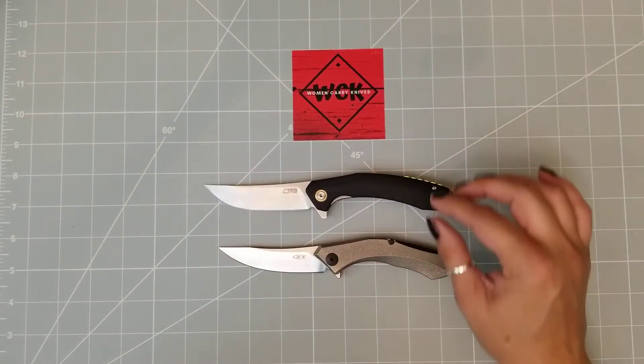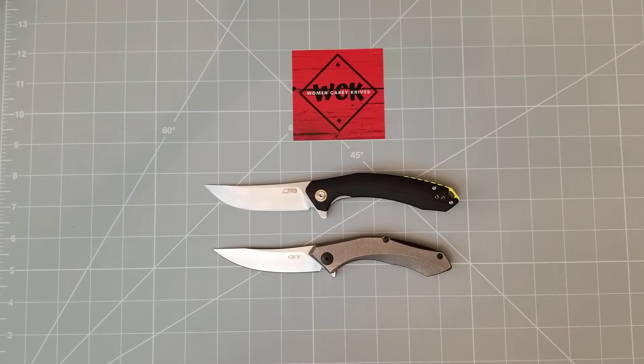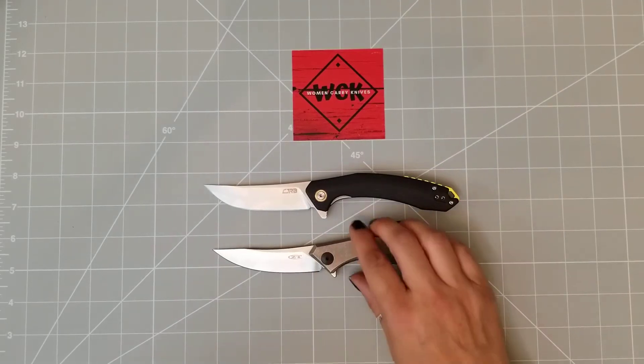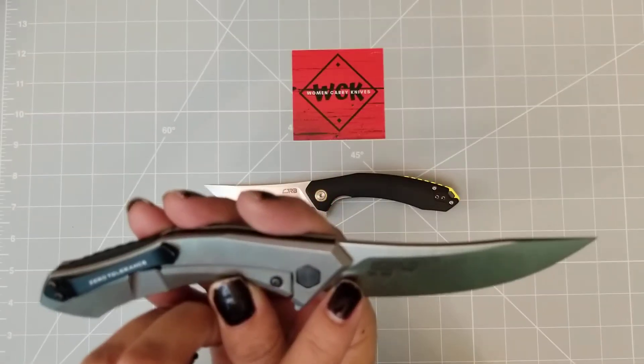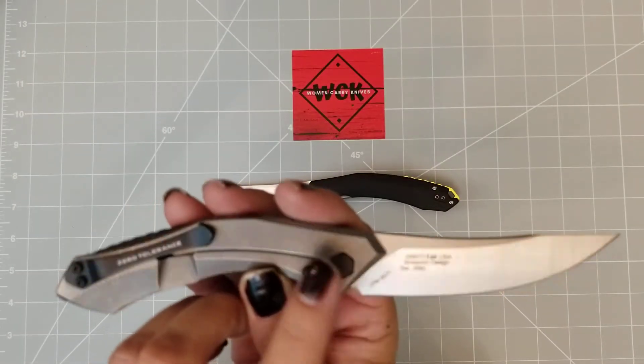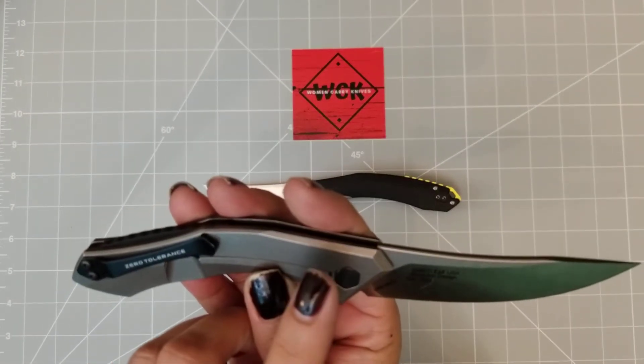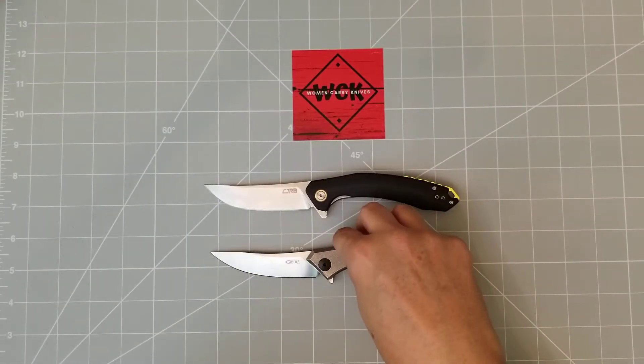Now, why do I have two of them here? Well, this is the ZT Sinkiewicz Design 0460 Titanium. These are both Persian style knives.